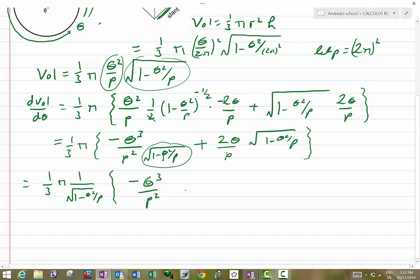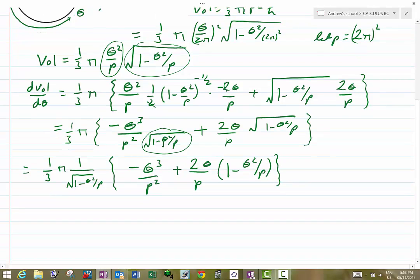And because we've divided through by the root, I've got to multiply through by the root on the right-hand side as well, and I'm going to be left with 2 theta over p times by just 1 minus theta squared over p without the root. Now it's looking a lot better.